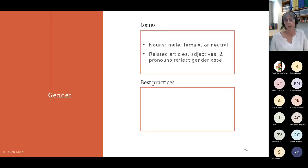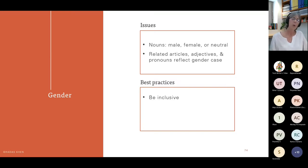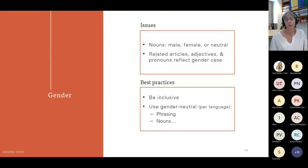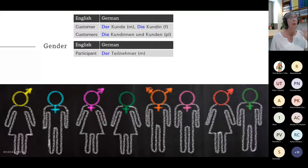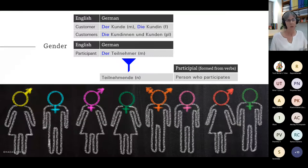Gender is a particularly sensitive subject these days. English has gender-neutral nouns, which isn't the case for all languages. Languages that do have gender-specific nouns will, more often than not, also have articles, adjectives, and pronouns that reflect the gender. Our goal is to be inclusive and use gender-neutral phrasing and nouns per language as much as the languages will allow. In English we have 'customer' and 'customers' — nice and neat. In German, you can see the results: the word for customers is extremely long. A workaround is to use the word 'participant,' filtered from the masculine form into a neutral form by forming a participial verb — 'person who participates.' It's not simple in some languages.